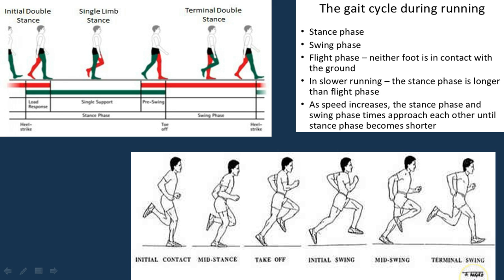Generally the swing phase is passive. Looking into the different sub-phases, you've got the initial contact, mid stance, takeoff, initial swing, mid swing, and terminal swing. You also have the braking stage, which is linked with absorption of energy.